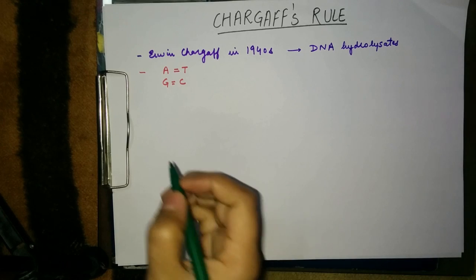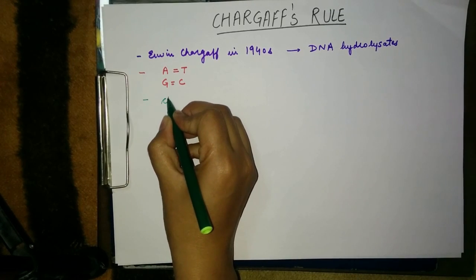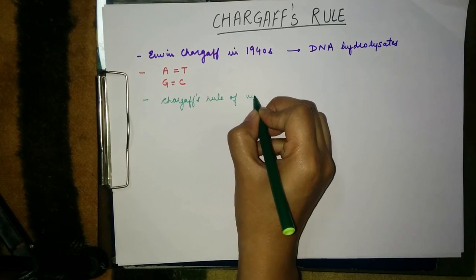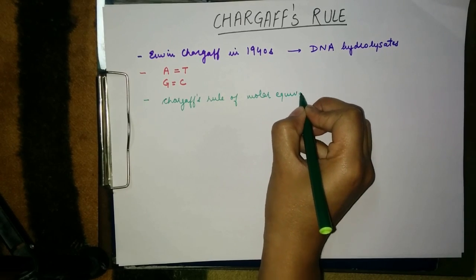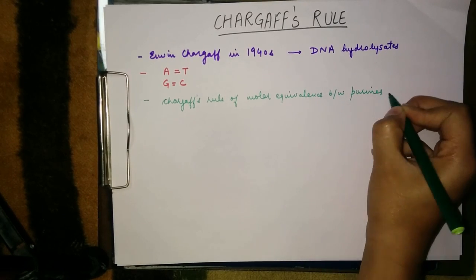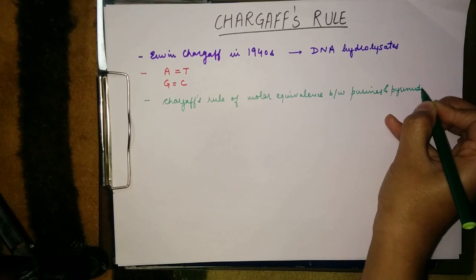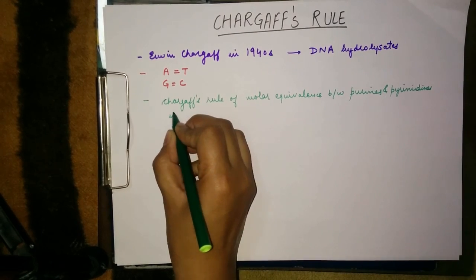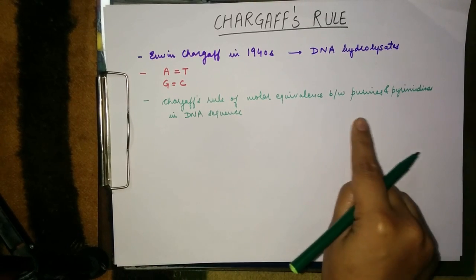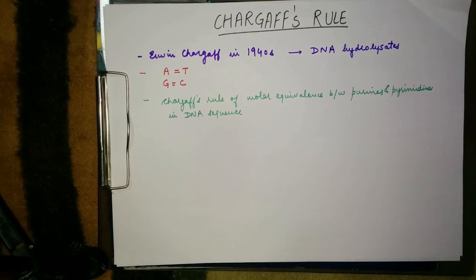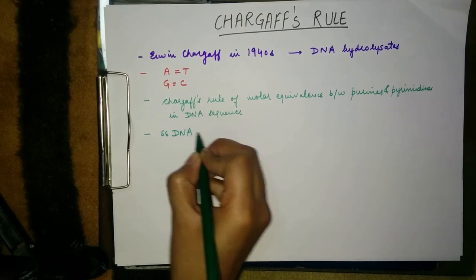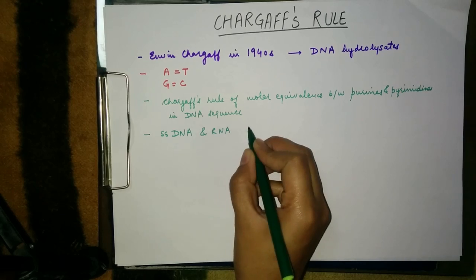This analysis is also called Chargaff's rule of molar equivalence between purines and pyrimidines in the DNA sequence. The exception to this rule is that single-stranded DNA and RNA do not obey this rule.